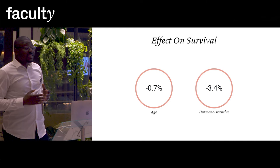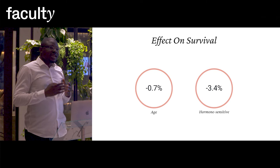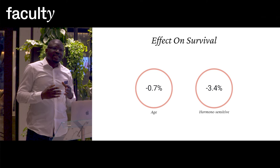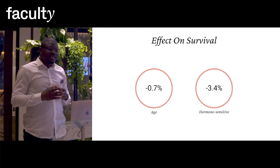This model is able to estimate that with every increase in age by one year, this decreases the chance of survival by 0.7%. And for patients that have breast cancer that is hormone-sensitive, their chances of survival are decreased by 3.4%.